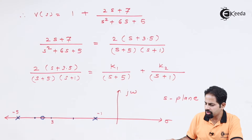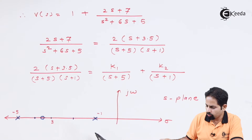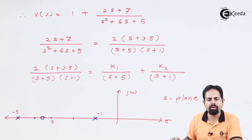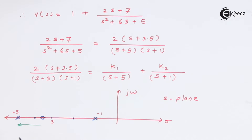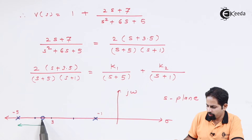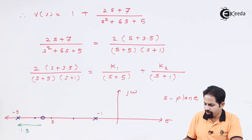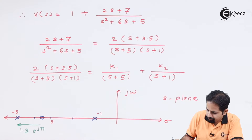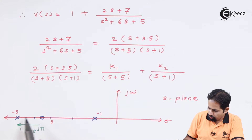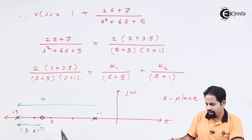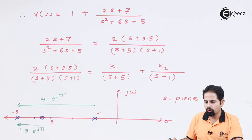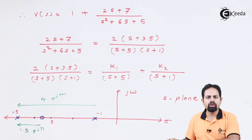Suppose we want to determine k1 first. We have to consider this pole and draw all the vectors coming towards it. From the zero at minus 3.5, there will be one vector whose length will be 1.5, because this is 5 and this is 3.5. The angle is 180 degrees, so it is e raised to j pi. From this pole to the other pole, the length is going to be 4, and the angle is again 180 degrees. We will combine both — the zero vector in the numerator and the pole vector in the denominator.